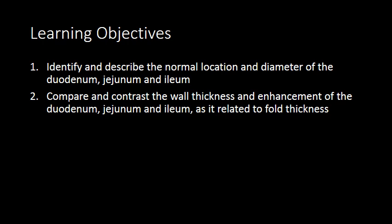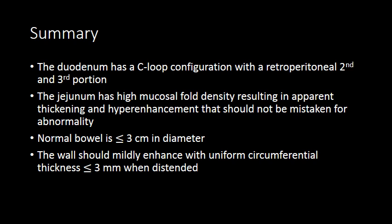Hopefully after this screencast, you can now identify the normal location and diameter of the various segments of the small bowel and compare and contrast the normal wall thickness and enhancement of the different segments. In summary: the duodenum has a C-loop configuration with retroperitoneal second and third portions and intraperitoneal first and fourth portions. The jejunum has a high mucosal fold density that results in apparent thickening and hyper-enhancement that should not be mistaken for abnormality, particularly when the jejunum is not distended with fluid. The normal small bowel should be less than 3 centimeters in diameter, and the wall should mildly enhance with uniform circumferential thickness of less than 3 millimeters when distended.